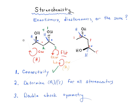Now we can do the same thing for the stereocenters on the right molecule. Priority 1 is the O, carbon is priority 2, CH3 is priority 3, and hydrogen is priority 4. Notice how hydrogen is pointing out of the page, so whatever direction we get, we're going to have to flip. Going 1, 2, 3 clockwise — but since hydrogen is in the front, we flip to counterclockwise, which makes this S.